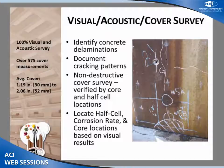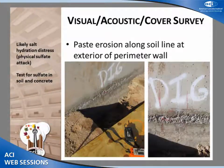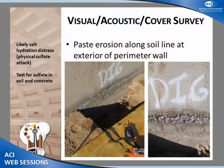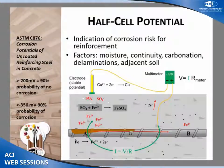Based on the visual assessment, we could then lay out where we wanted to do half-cell testing and corrosion rate testing. We used the visual survey results to identify where to locate additional testing measures. We also saw some paste erosion along the soil line around the perimeter of the tank. We felt that was likely salt hydration distress — physical sulfate attack along the exterior — so we added to our laboratory evaluations testing of both the concrete and the soil for sulfates.